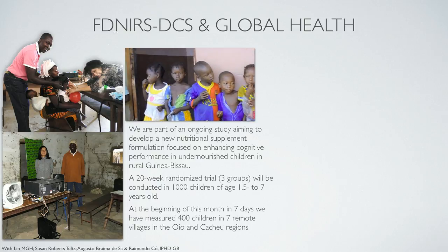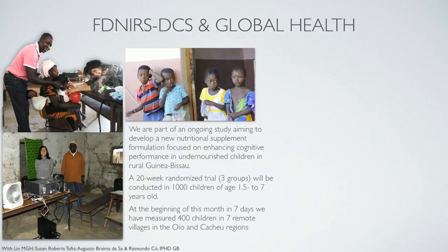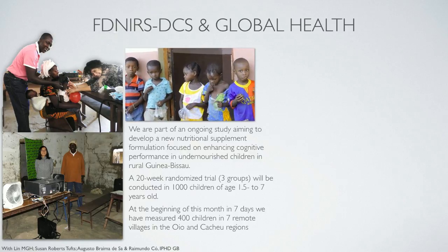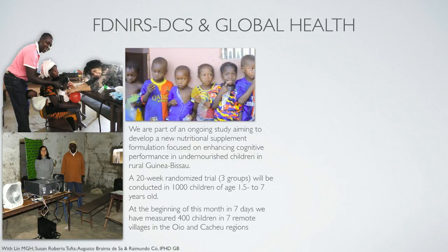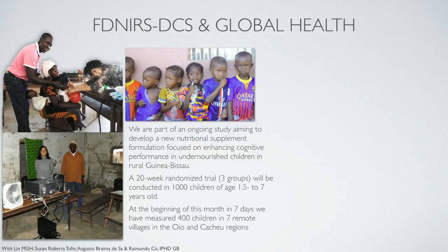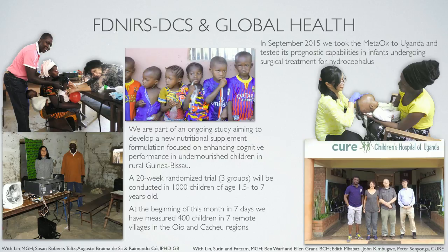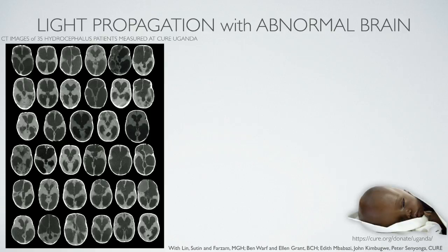Two weeks ago, me and my colleague were in Guinea-Bissau, West Africa, where in seven days we measured 400 children in seven villages to study how malnutrition affects brain development. In September 2015, we brought the device to Uganda at the CURE hospital to study whether we can improve the prognostic capability for hydrocephalus. Hydrocephalus in Uganda and sub-Saharan Africa is unfortunately very frequent and is caused by neonatal sepsis, which is one of the major causes of death in newborns in Africa.